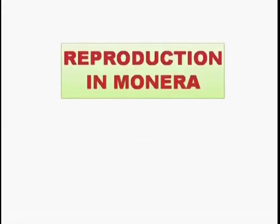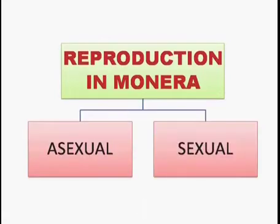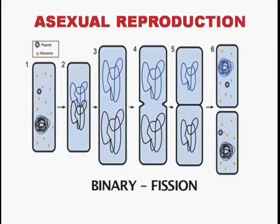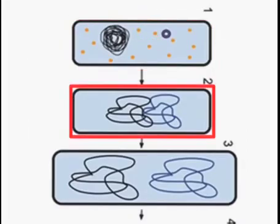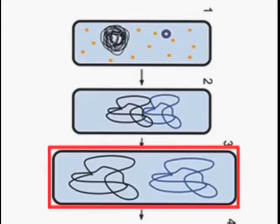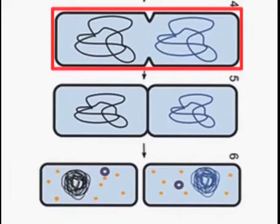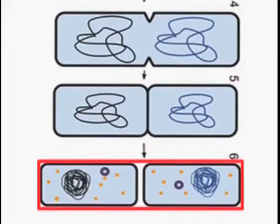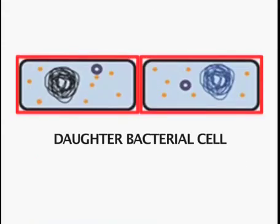Reproduction in these monerans is both by asexual and sexual methods. As you can see in the figure, the asexual method of reproduction takes place by binary fission. The DNA replicates first, and as it replicates, the bacterial cell starts growing and enlarges in size. Once DNA replication is complete, the two DNA molecules move to opposite poles of the bacterial cell. A constriction appears in the middle, deepens, and finally results in the formation of two bacterial cells which separate from each other. Each one is a daughter bacterial cell with its own DNA, capable of independent existence.